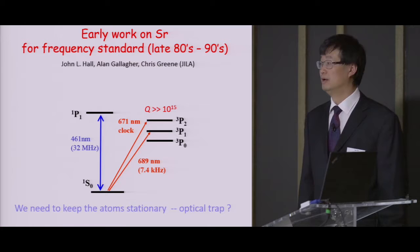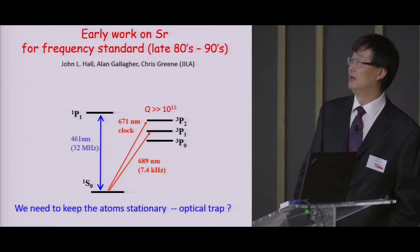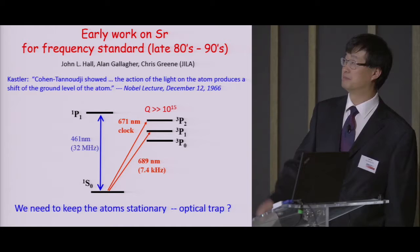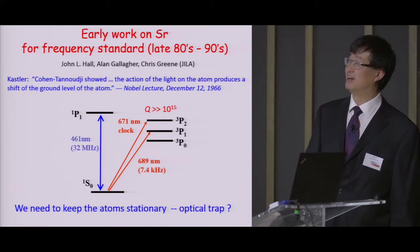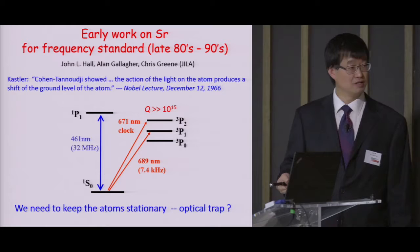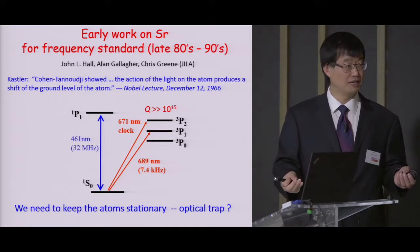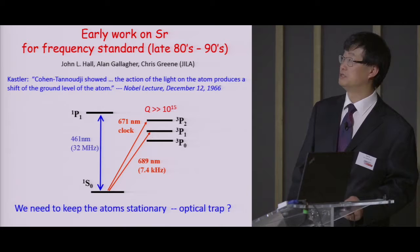The question came to our mind: we have this fantastic atom, strontium, that has two valence electrons so you have spin singlets and spin triplets. At the time Jan and Alan Gallagher and Chris Greene were thinking about the transition of triple P2. They already knew that they can do two-stage cooling on the strong transition and the weak transition on triple P1 and the clock state they were thinking about the triple P2. This state is supposed to be very long-lived and at the time when you talk about quality factor of greater than 10 to the 15 this seems like a dream far in the future. But we probably need to keep the atom stationary and that means if it's a neutral we probably have to think about optical traps.